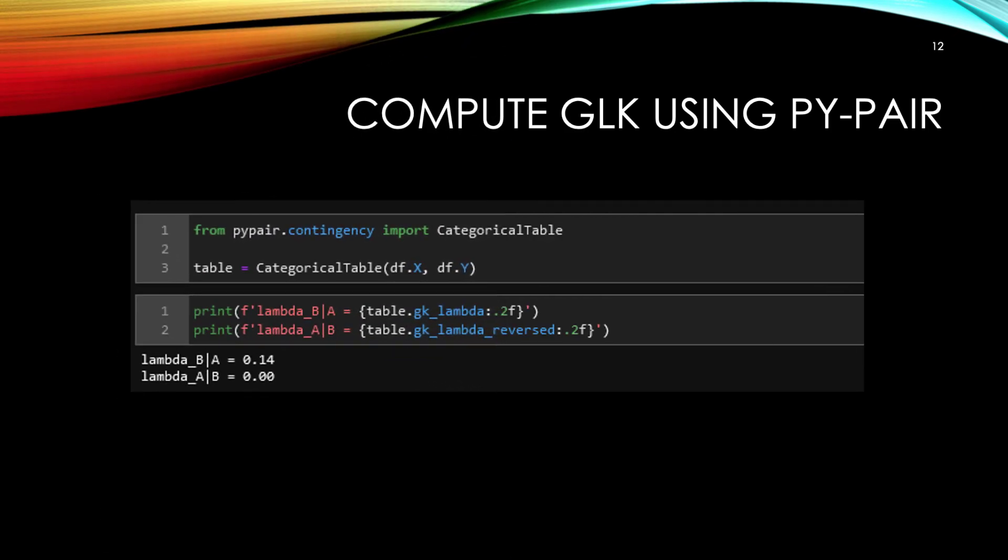Lastly, I show the code to compute GKL using PyPair. First, I create a categorical table from the X and Y fields of the data frame. Then, I simply access the GKL property to get the value. By default, the first value would be the predictor, in this case X. So, accessing GKL lambda will give us the lambda of B given A. I can compute the reverse GKL by accessing GKL lambda reverse, which gives us the lambda of A given B. The lambda values do not match identically with the examples thus far because of precision and also because all cell counts have one added to avoid division by zero errors.